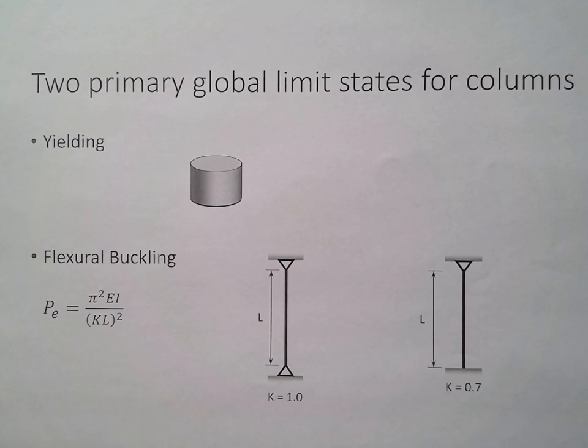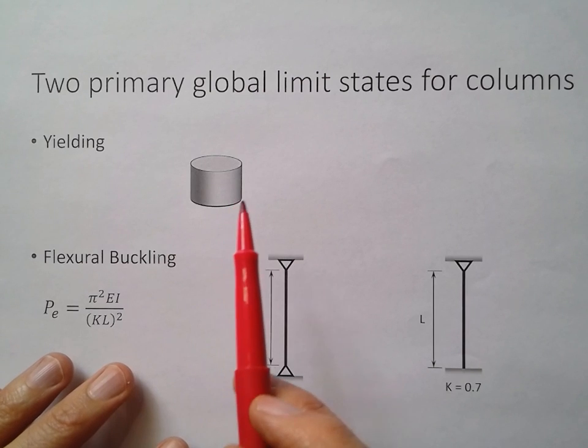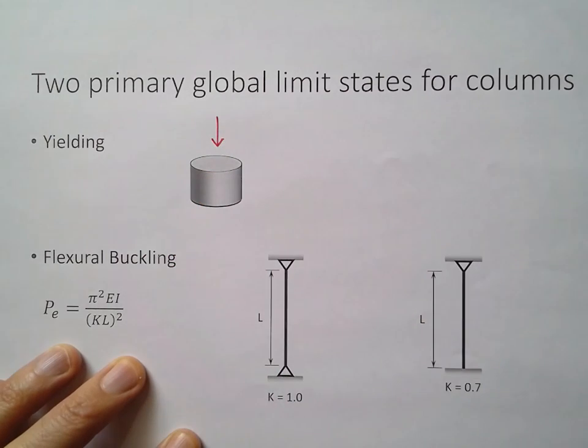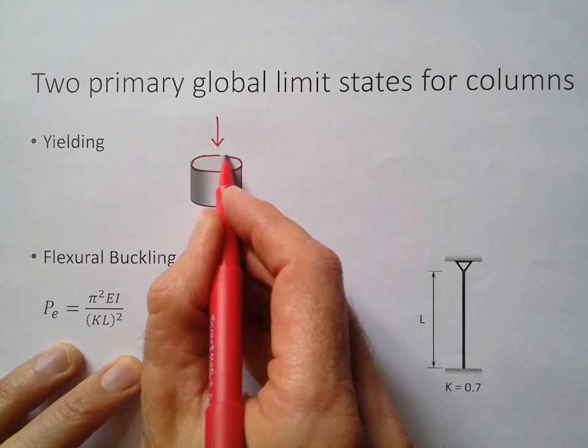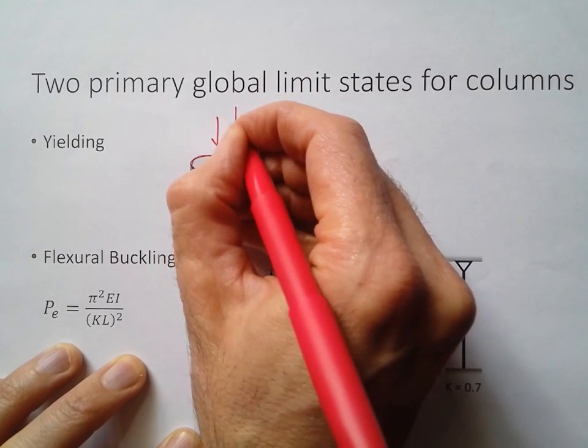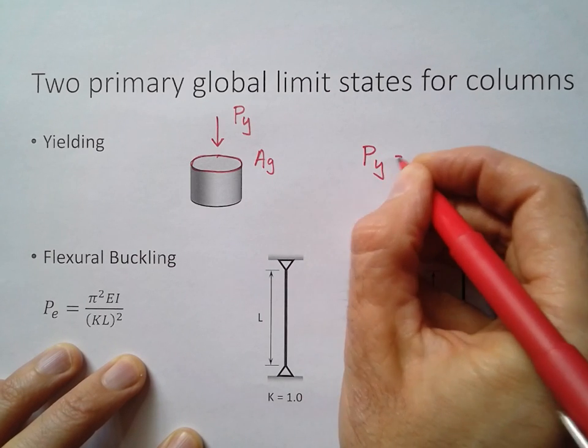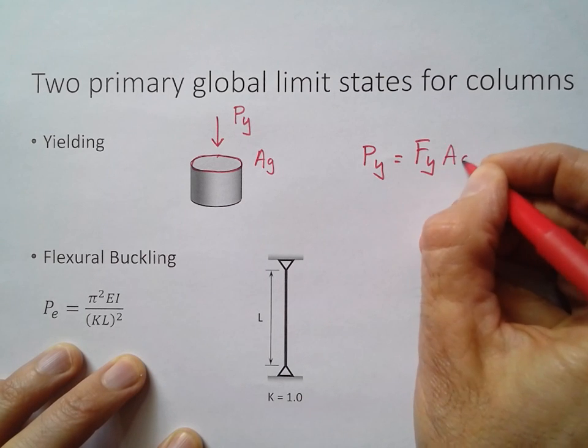There are other limit states you can consider for columns, but I just want to look at these two: yielding and then buckling. If a column is going to fail under yielding, it's typically going to be short and stocky like this one here. We're going to put some compressive load on that column. This area here, we're going to call that the gross area. The force that would cause it to yield, I'm going to call that P sub Y. P sub Y is equal to the yield stress F sub Y times the gross area.